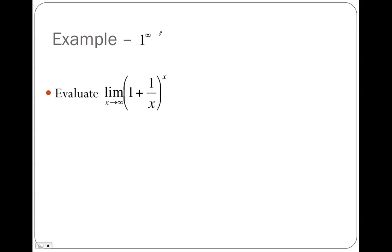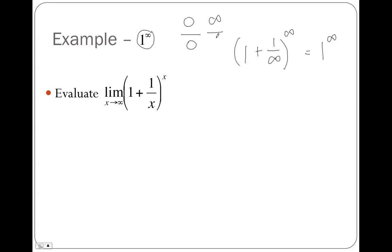Here's an interesting and tricky example — a 1 to the infinity case. When I plug in infinity for x, I have (1 + 1/∞)^∞. Since 1/∞ = 0, this is 1^∞, which is indeterminate. I need to get this into a L'Hôpital-able form. Here's the technique: set y equal to the limit as x approaches infinity of (1 + 1/x)^x. You may wonder how I know to do this — somebody showed me this technique and I'm showing it to you.